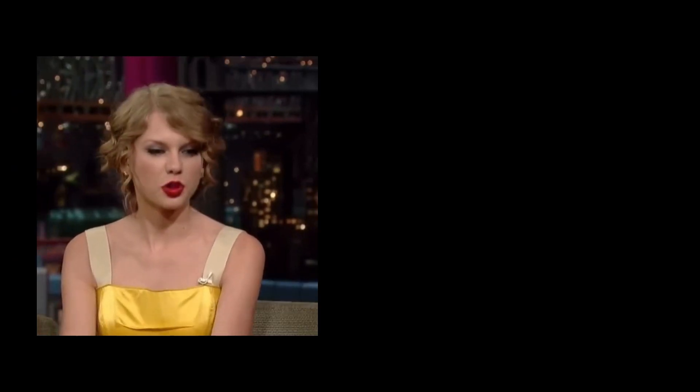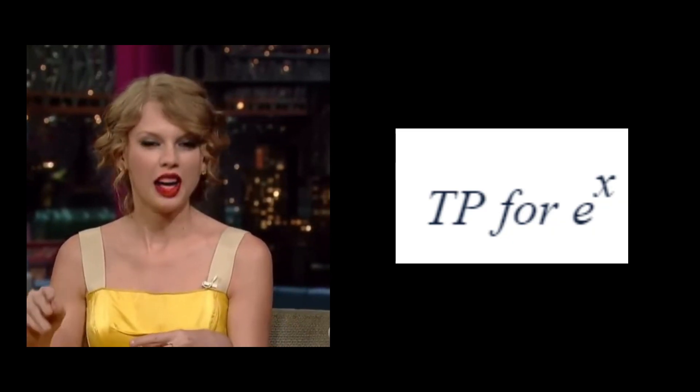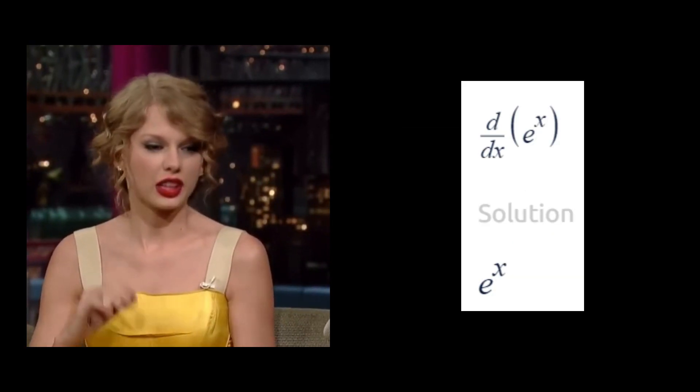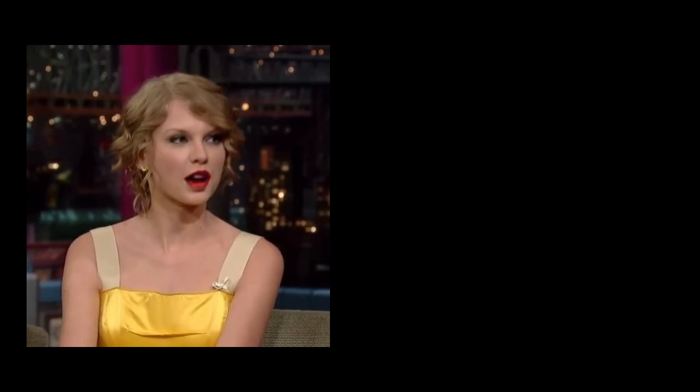Let's jump into an example. An easy one is e to the x. We know that the derivative of e to the x is always e to the x. Let's center this polynomial around x equals zero. So our a is zero. Okay, take it from here spicy.